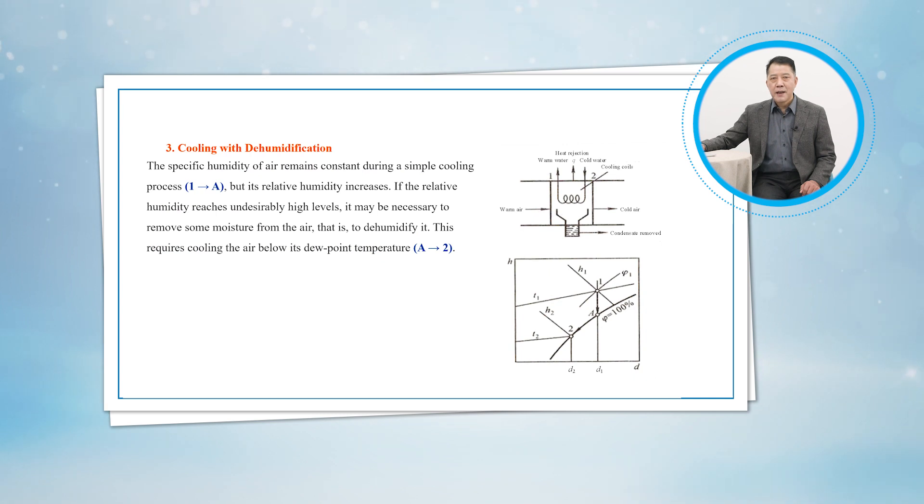Thirdly, let's talk about cooling with dehumidification. The specific humidity of air remains constant during a simple cooling process, while its relative humidity increases. If the humidity reaches undesirably high levels, it may be necessary to remove some moisture from the air, that is to dehumidify it. This requires cooling the air below its dew point temperature.